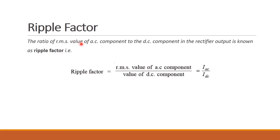Next, ripple factor. Ripple factor is the ratio of the RMS value — root mean square value — of the AC component divided by the value of the DC component. That is equal to I_AC divided by I_DC.